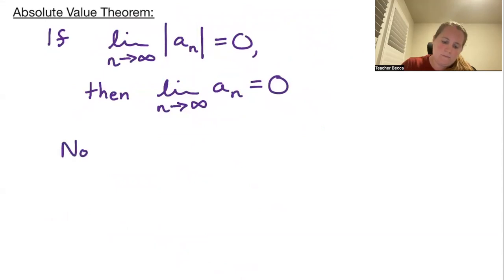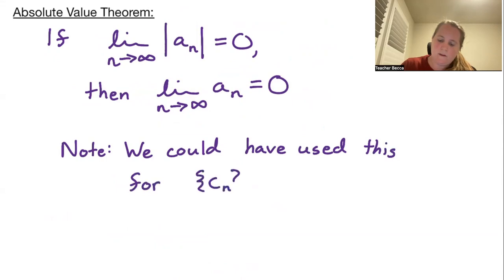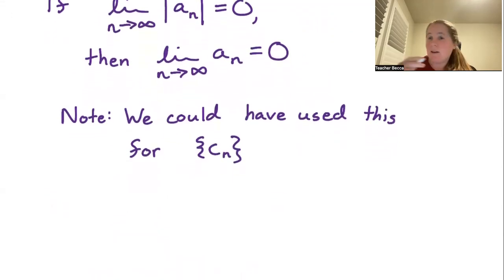So note, we could have used this for our c_n. Essentially, what this theorem is stating is whether or not a function is going positive and negative. As long as it heads to zero in absolute value, in magnitude, it must head to zero just in general.